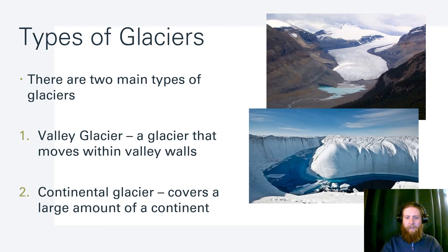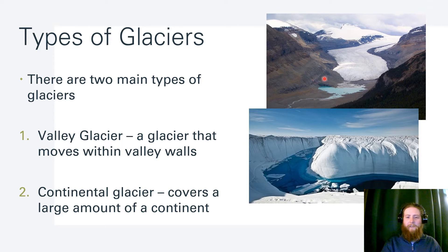There are two types of glaciers, determined by where they formed. The first is valley glaciers — glaciers that are moving inside of a valley, like a river of frozen ice moving downhill. The second is continental glaciers, which cover large chunks of a continent, not necessarily going down a valley, but more like sitting on a large area like Antarctica, Greenland, or Alaska.